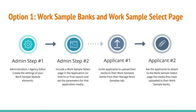Let's dive a little deeper into option one, which makes use of the Work Sample Banks and the Work Sample Select Page. Step one for you as admin is creating the settings of your Work Sample Module Elements on the Administration tab, Agency Editor sub-tab. Step two is including a Work Sample Select Page in your application, or possibly your interim or final report, and setting the parameters for that application media. For applicants, step one is uploading their media to their Work Samples Banks from their Manage Work Samples tab, and step two is attaching the appropriate media to the Work Sample Select Page.